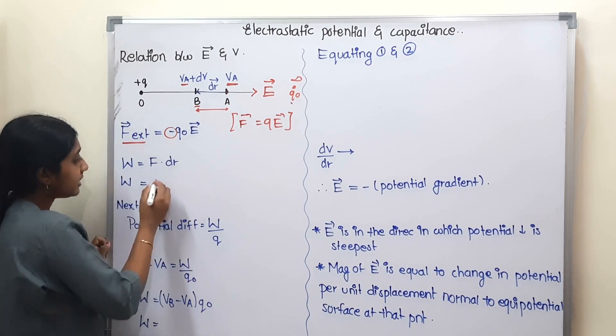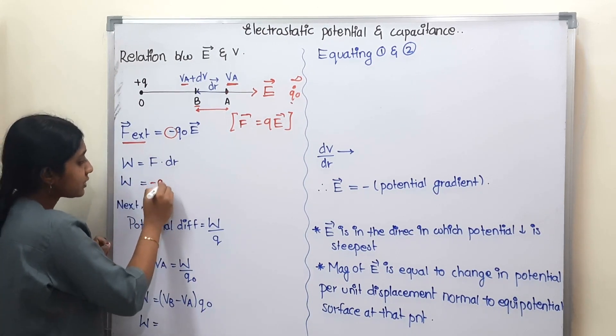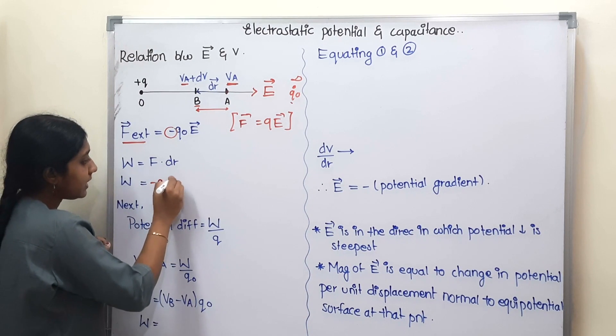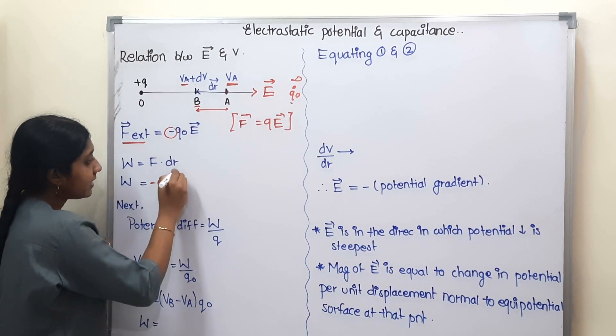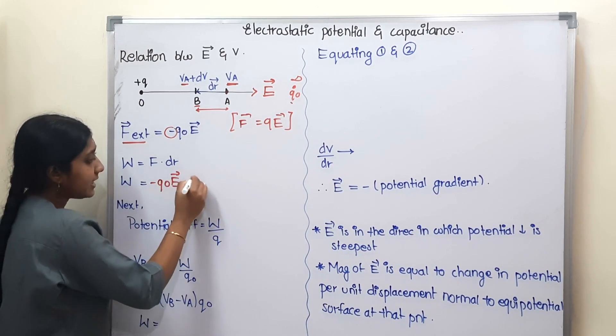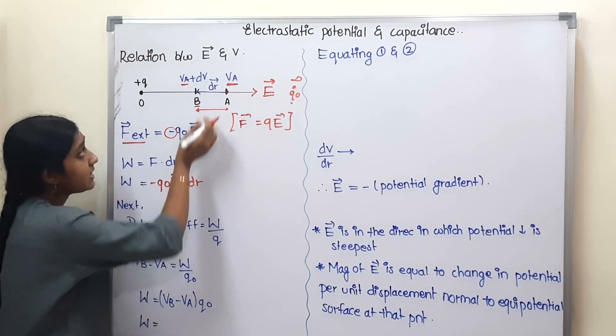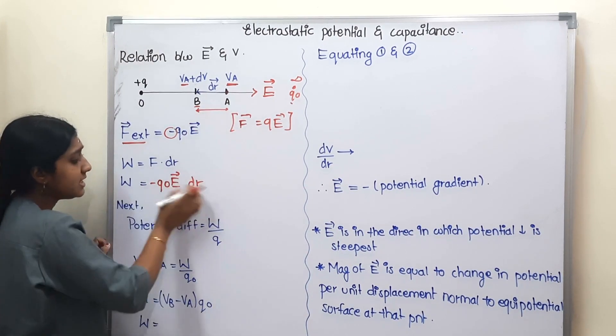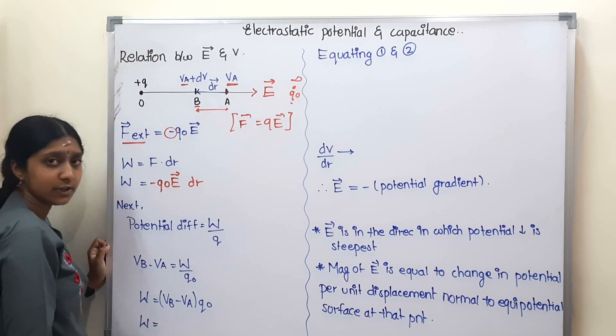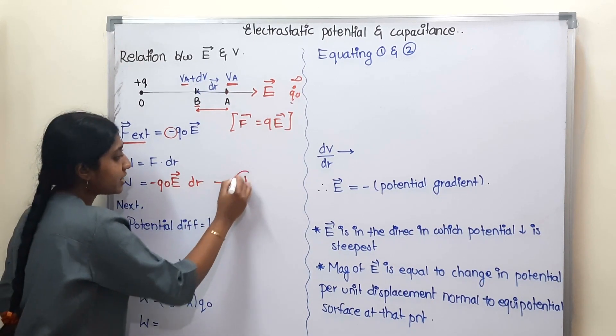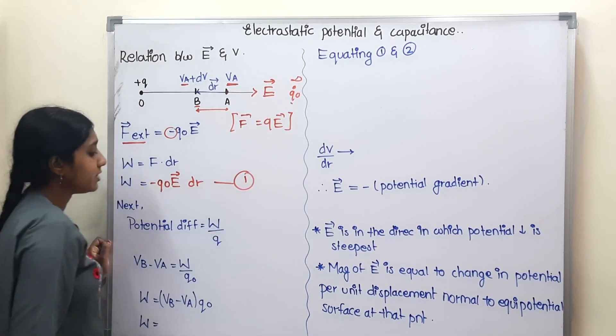Work done equals force into displacement. The work done by the external force is: W = −q₀ E-vector · dr. This gives us equation 1.